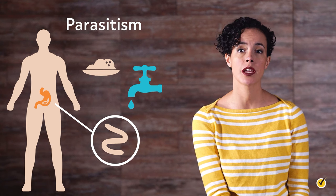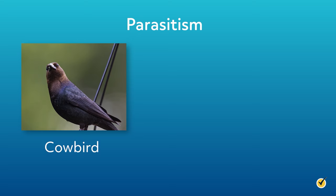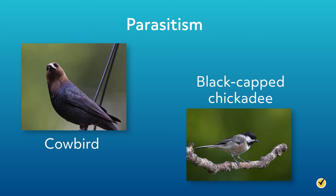However, parasitic relationships aren't limited to the microscopic world. Cowbirds are a species of birds that, instead of raising their own young, take advantage of another bird species, since birds cannot easily distinguish between their young. Female cowbirds will lay their eggs in another bird's nest, like a black-capped chickadee, and the female chickadee will feed both her own young and the cowbird nestling. However, cowbirds are much larger than most birds, so they demand more food and nest space. In the end, some of the chickadee's young will die while the cowbird nestling lives.